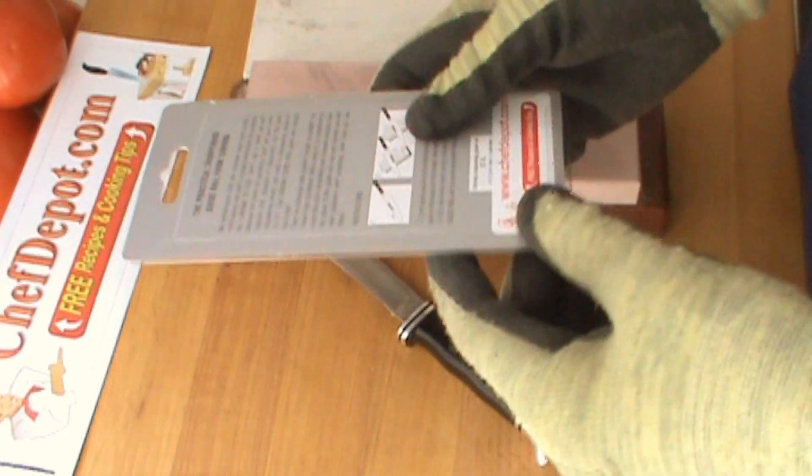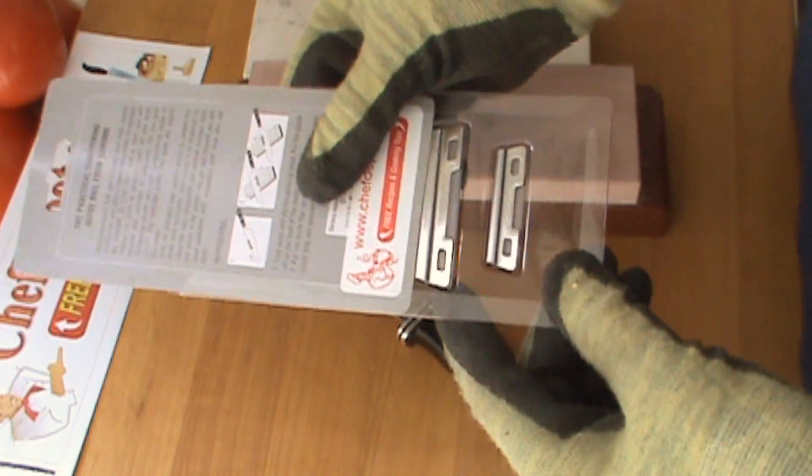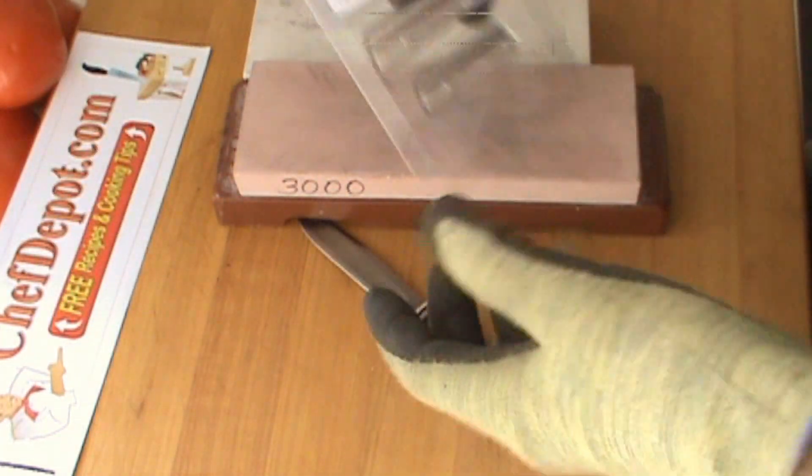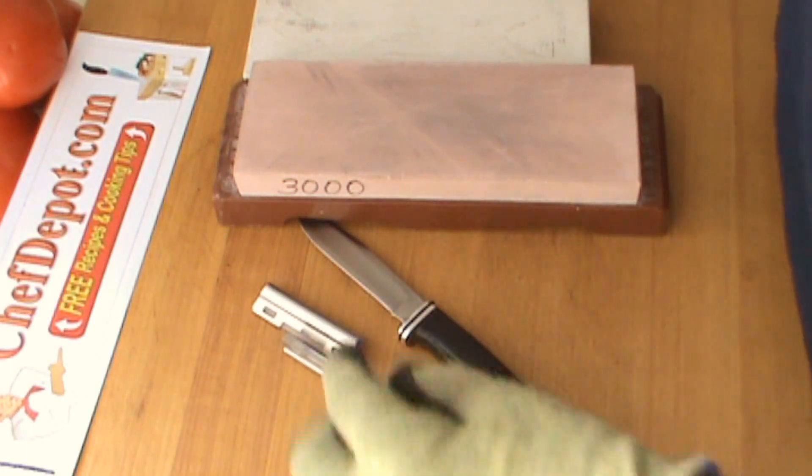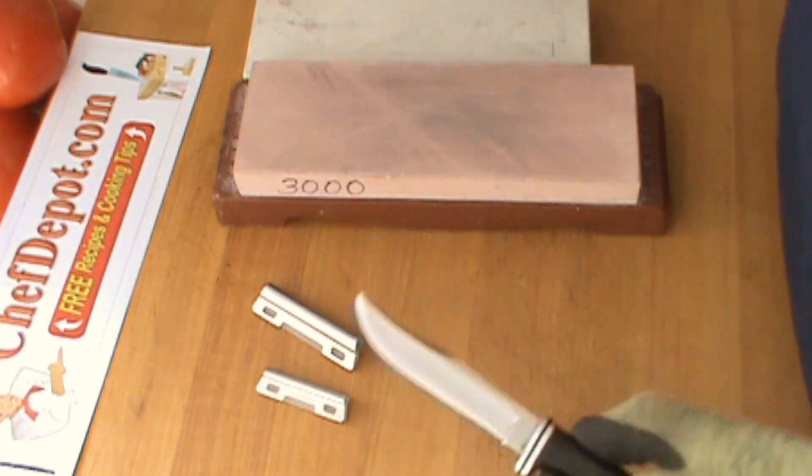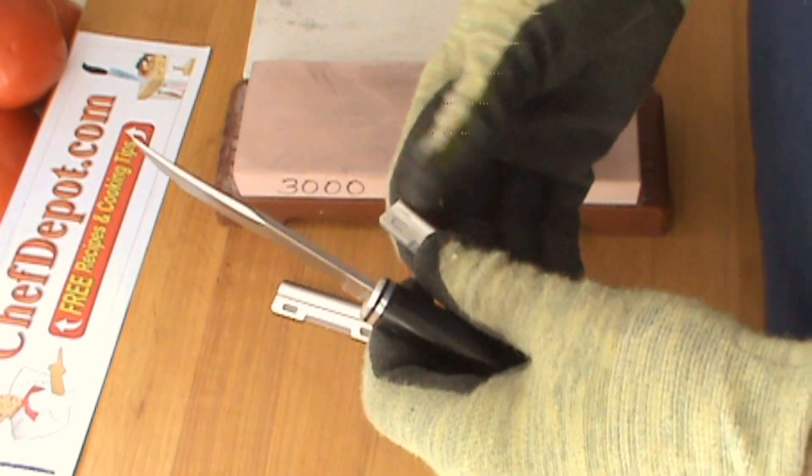Besides the stones, we're going to be using these clips today. The clips are available at the site. You get two clips, a large and a small. They're stainless steel. They're pretty nice quality and they're made to fit right over your knife without scratching it.